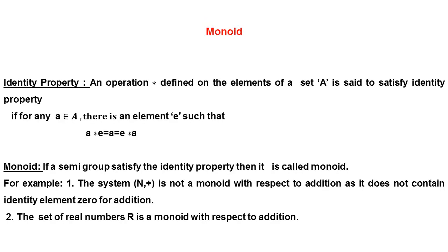Now we discuss the identity property. An operation star defined on the elements of a set A is said to satisfy identity property if for any a belonging to A, there exists an element e such that a * e = a = e * a. That means if we operate any element with element e of a set and the resulting element is the same element, then e is called the identity element of that set. The identity element is always unique for the given operation.